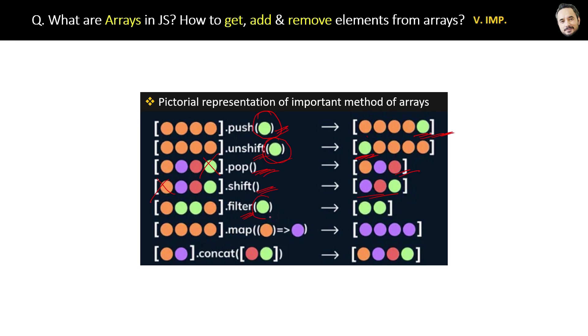Then we have the filter method, which is used to filter the array based on the condition. The map method is used to modify each element of the array, and the concat method is used to add arrays into a single array. Great! Now you know what is an array, why we need it, and what are some of the important methods of it.